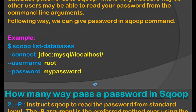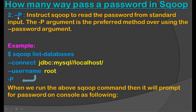Now let's see the next option: `-P`. This instructs Scoop to read the password from standard input. The `-P` argument is the preferred method over using `--password`, because with `--password` anyone can see the password, but with `-P` you type the password and no one can see it.